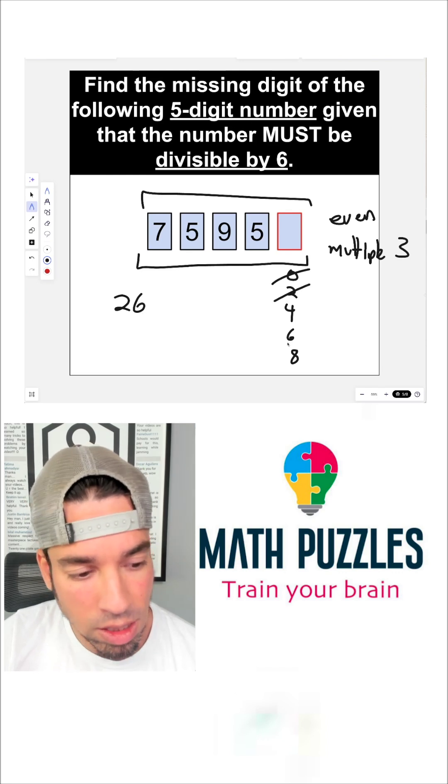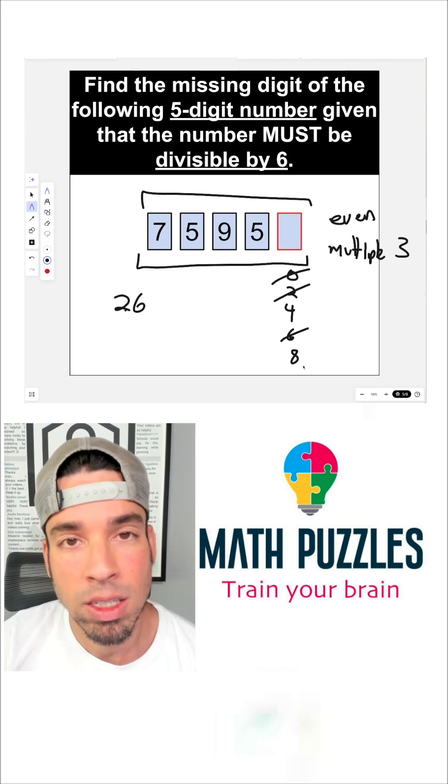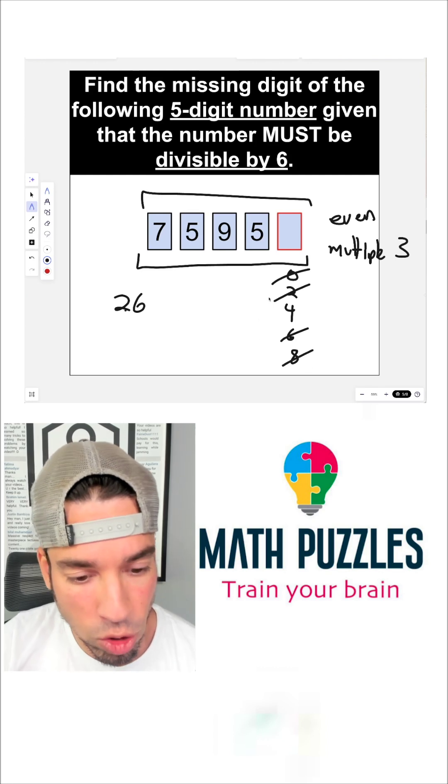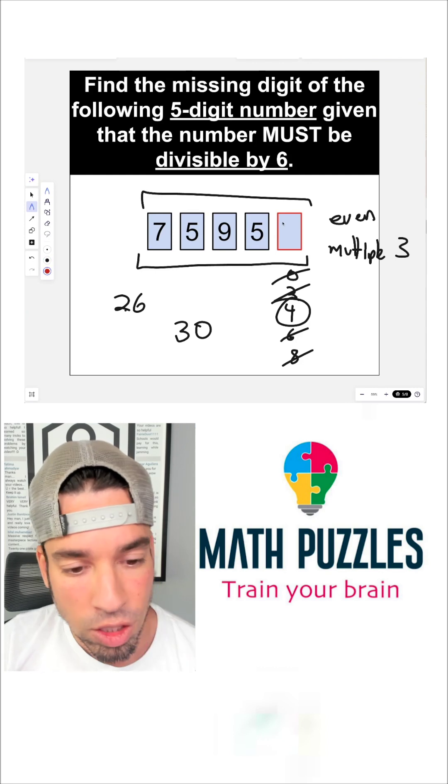26 plus six is 32. Again, not divisible by three. And 26 plus eight is 34, not divisible by three. But 26 plus four is 30. So the missing digit is four.